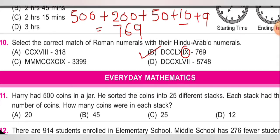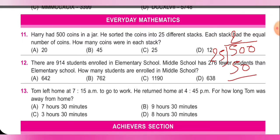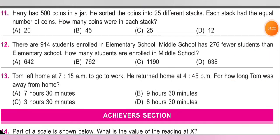Everyday Mathematics — Harry had 500 coins in a jar. He sorted the coins into 25 different stacks, each stack having an equal number of coins. How many coins were in each stack? We divide: 500 ÷ 25 = 20. Option A is correct.